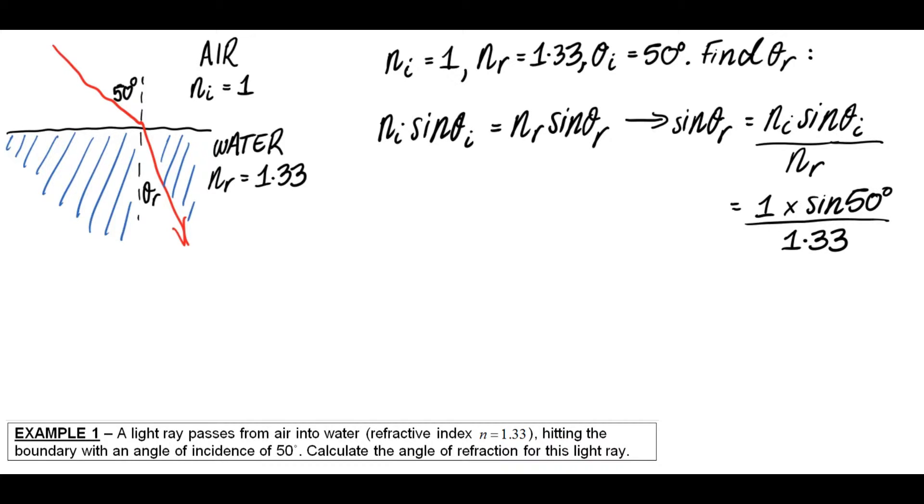So I've rearranged my equation, I now plug in the numbers that I know. I work it out on the calculator, and having done that, I get a final answer for sin θr of 0.576. Now that's not my final answer, that's not the actual angle itself. To get the angle itself, I need to now do the inverse sine of that, if you remember your trigonometry from last year, and that will give me my angle. So I do inverse sine of 0.576, which gives me 35.2 degrees as my final answer.